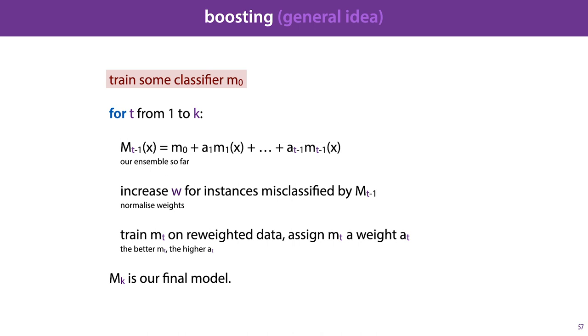We start by training some base classifier m0, and we take a number of steps k, where k is a hyperparameter indicating the number of models we ultimately want in our ensemble. And at each step in this loop, we train a new model and we add it to the ensemble together with a weight. The prediction of our ensemble so far is then the weighted sum of the predictions of all the models in our ensemble.